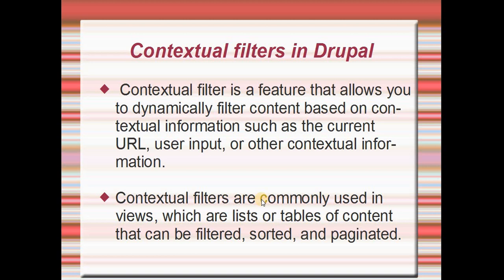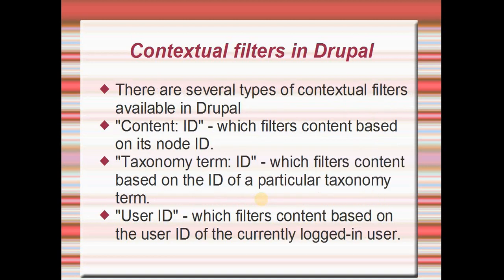Contextual filters are commonly used in views, which are lists or tables of content that can be filtered, sorted, and paginated. There are three types of filters available in Drupal. First is Content ID — by passing the node ID we can filter content for the node. Second is Taxonomy ID, which filters content based on the ID of a particular taxonomy term. Third is User ID, which filters content based on the user ID of the currently logged-in user.